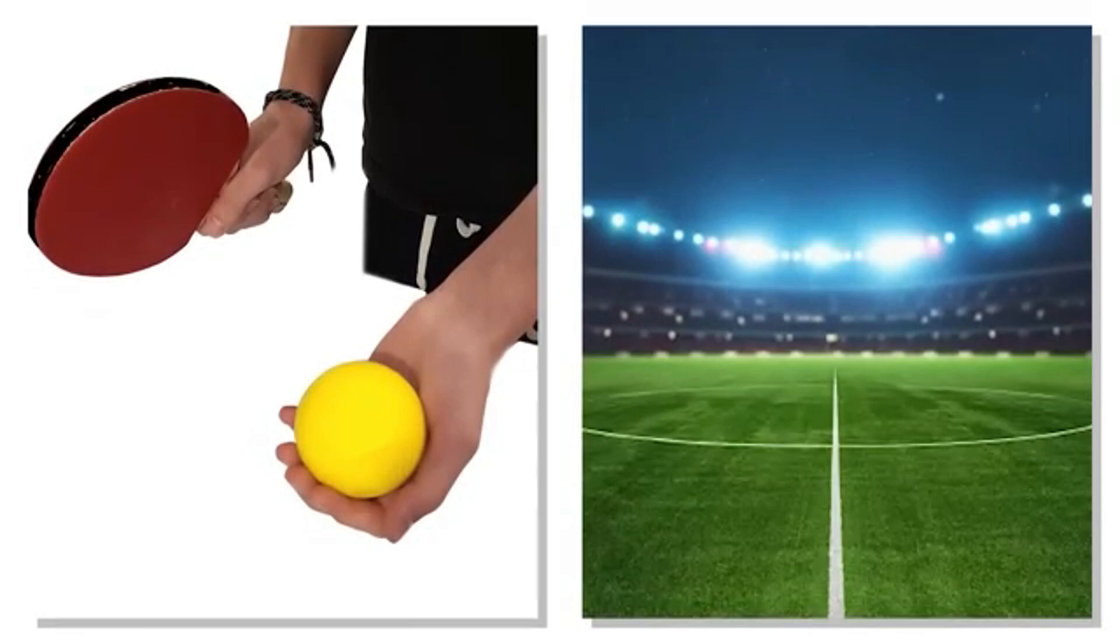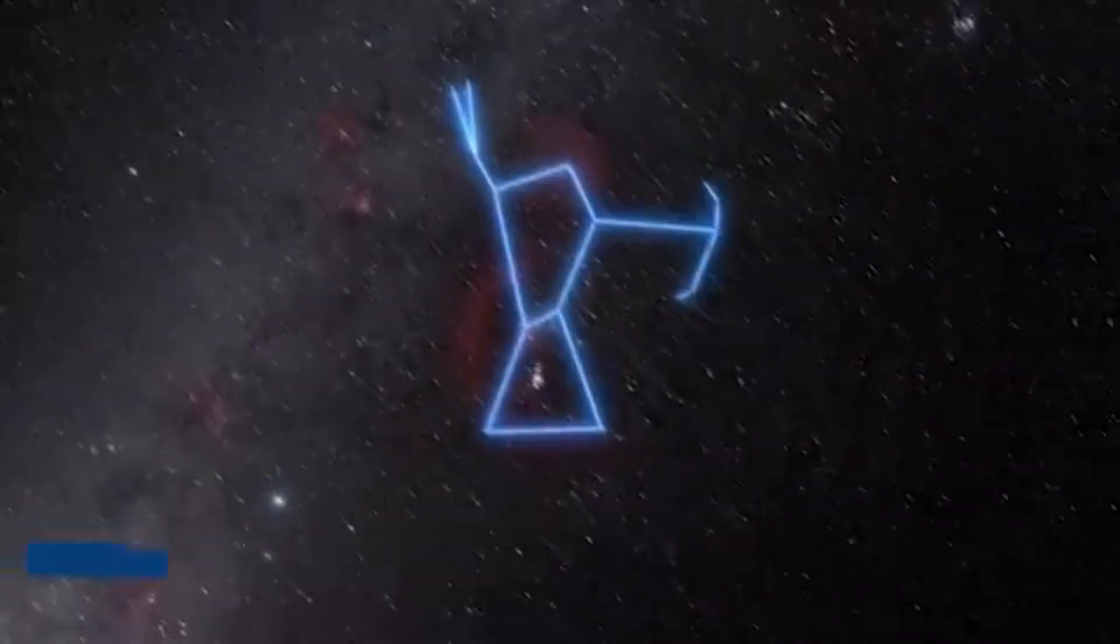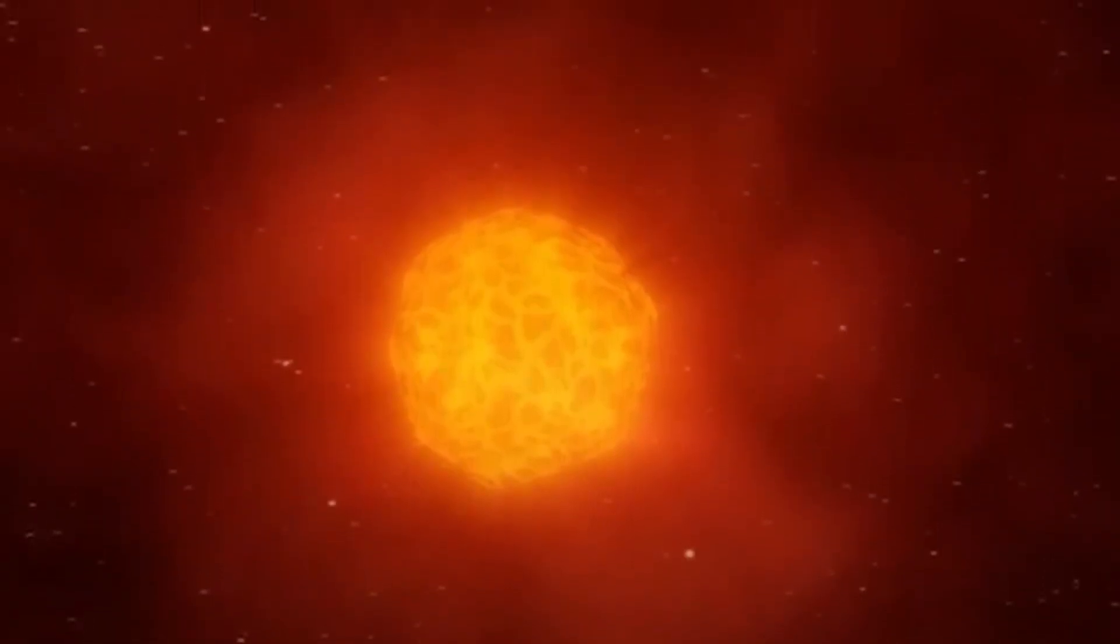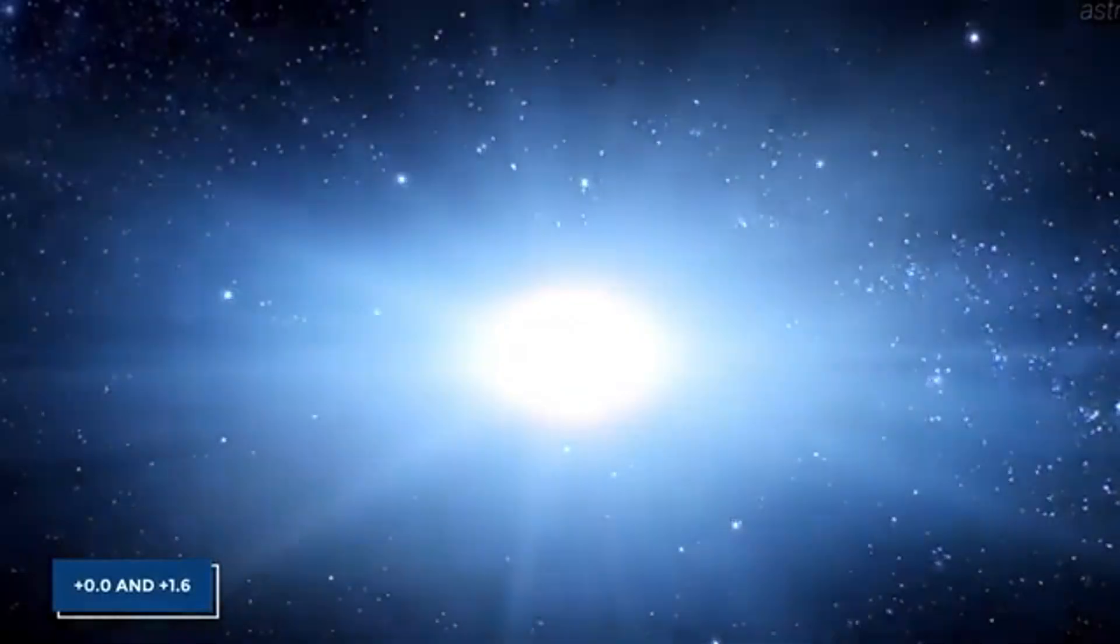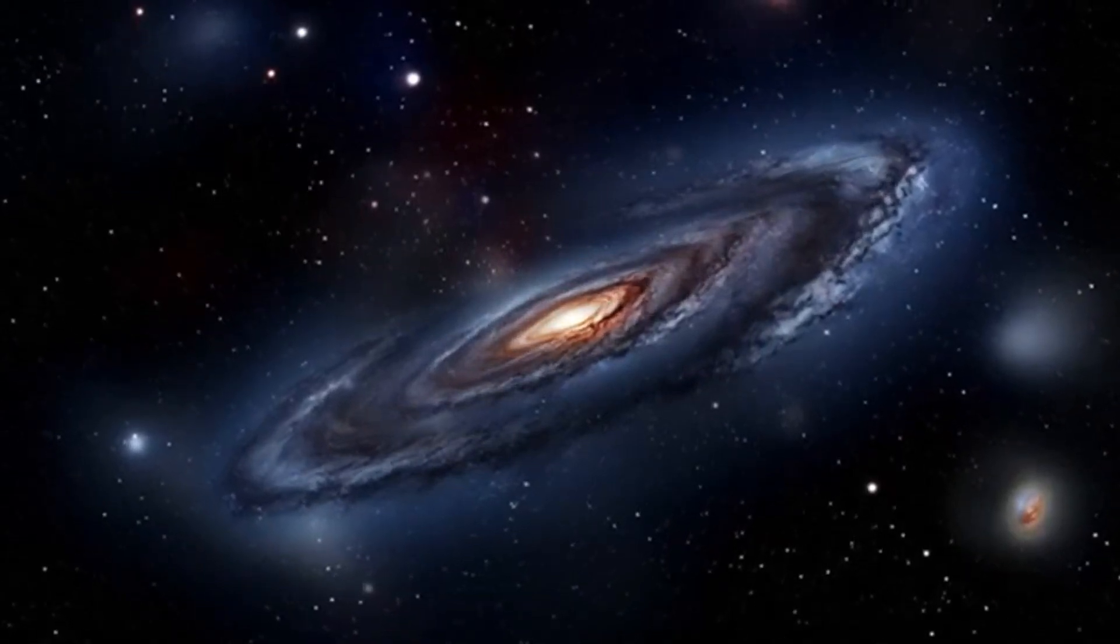Adding to Betelgeuse's mystique is its historical color change. Ancient Roman and Chinese writings suggest that around 2,000 years ago, Betelgeuse was yellow. It was only in the 9th century that Arabic scholars first described it as red. This color shift over human history is not just a detail in the annals of astronomy, but a clue to the star's evolutionary path.